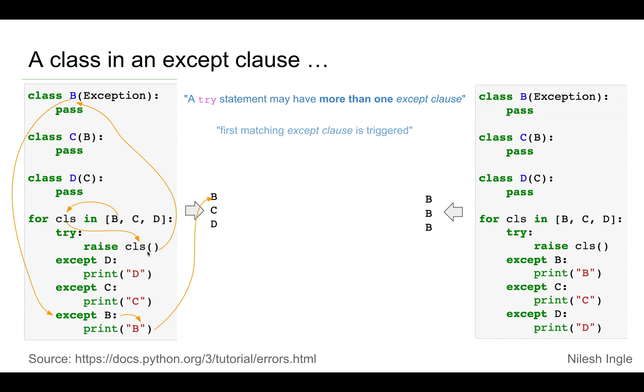So what essentially this is doing is in each iteration, one item from the list is taken up by cls, and that's what we get here. We are trying to raise that, raise in the sense we are artificially generating that error to happen without the need of writing any code.